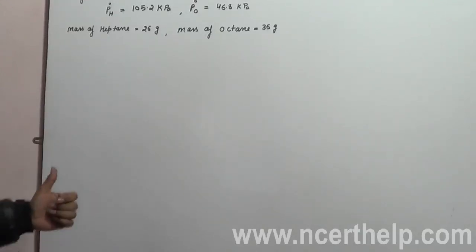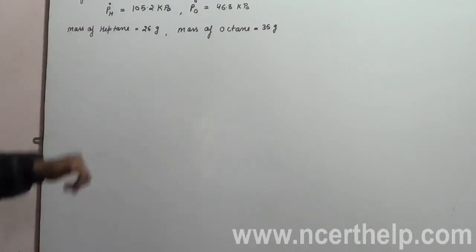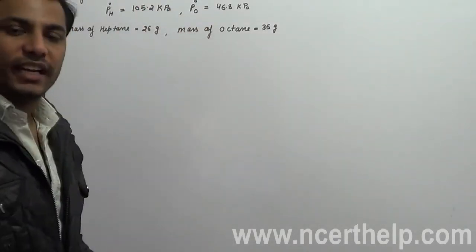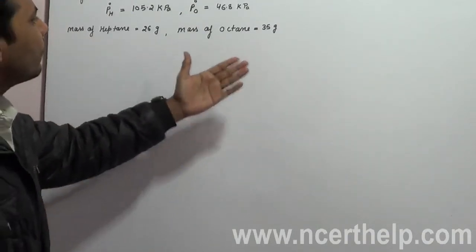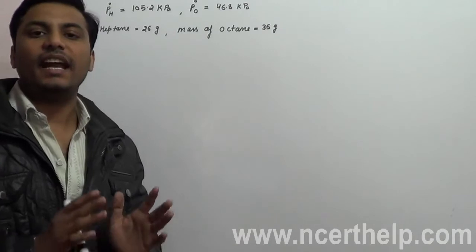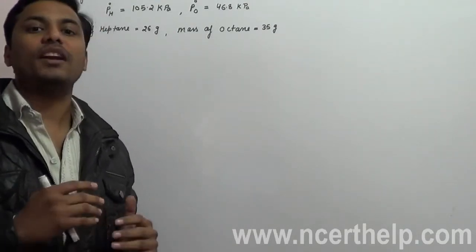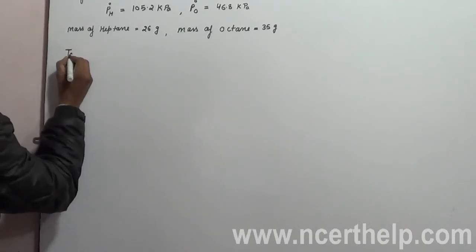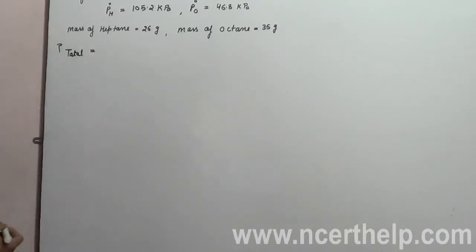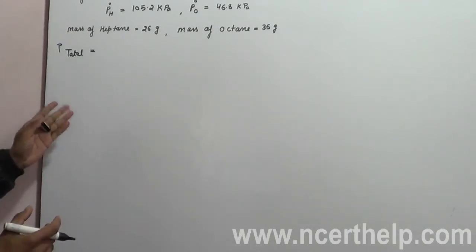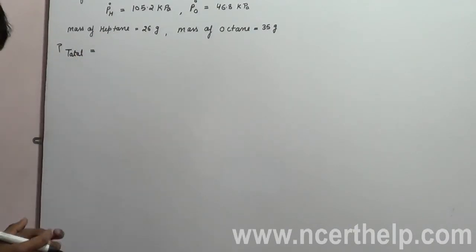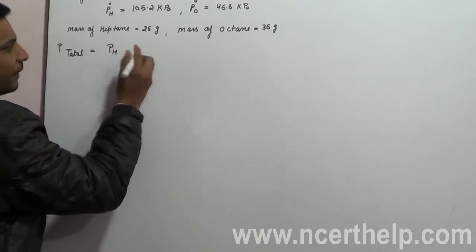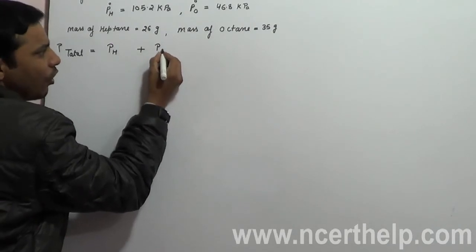Let's solve this problem. The pressure of pure heptane is given as 105.2 kPa and pressure of pure octane is 46.8 kPa. The mass of heptane is 26 grams and mass of octane is 35 grams. They are mixed together to generate a solution. We have to find the total partial pressure generated by both components: P_total equals partial pressure of heptane plus partial pressure of octane.